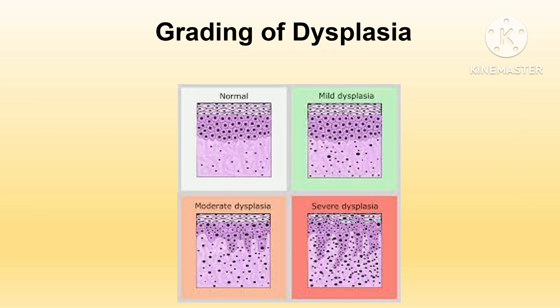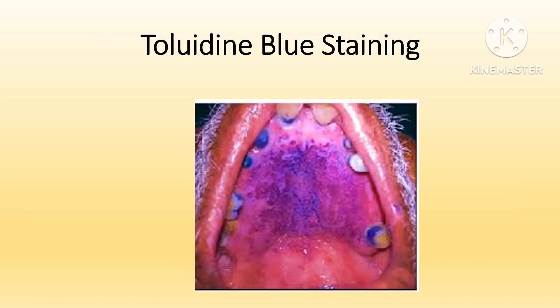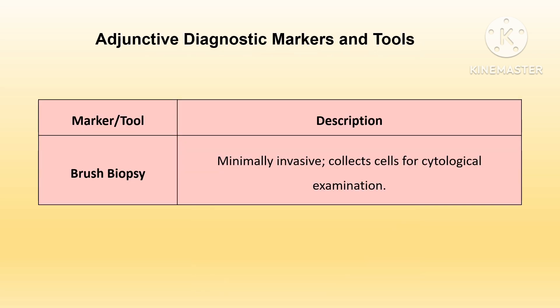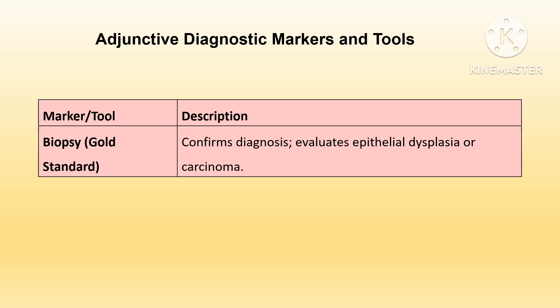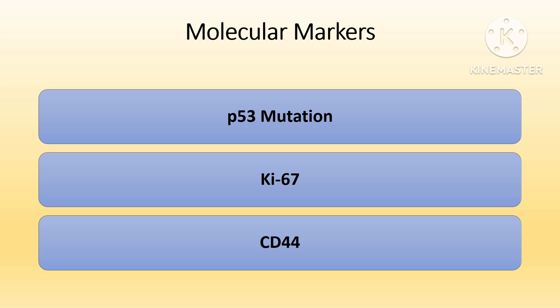Toluidine blue is a vital dye that selectively binds to DNA and RNA, especially in tissues with increased nuclear material. Positive staining in areas of dysplasia or malignancy retains the blue color, while benign areas do not retain the stain and appear clear. Molecular markers can detect genetic mutations or abnormal protein expression such as p53 or Ki-67. Mutations in the p53 tumor suppressor gene are often seen in erythroplakia, particularly in cases showing dysplasia or malignant transformation. An increase in Ki-67 index indicates high cellular proliferation, associated with pre-malignant and malignant cases.